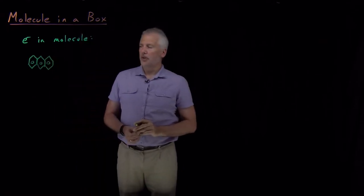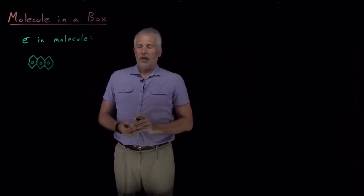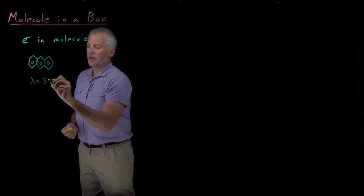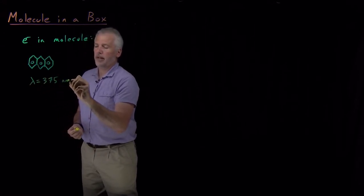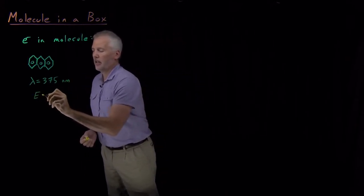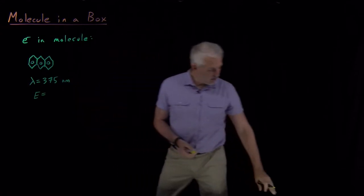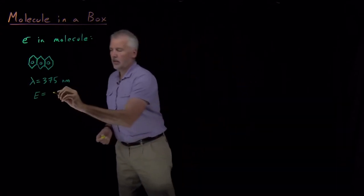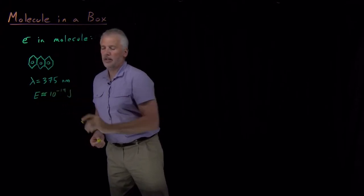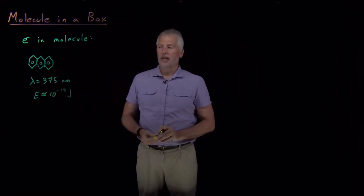That's an anthracene molecule. If we measure the frequencies of light absorbed by anthracene, anthracene absorbs light at around 375 nanometers. So that's the photon of light that has a wavelength of 375 nanometers. That value is at least approximately 10 to the minus 19 joules.